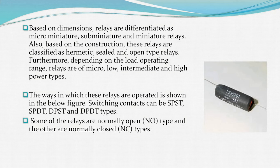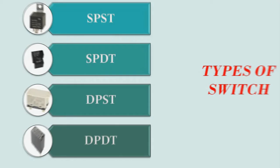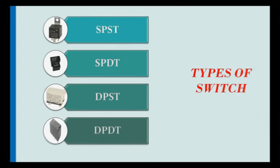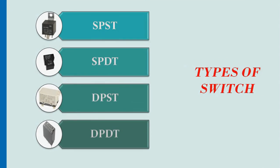Switching contacts can be SPST, SPDT, DPST, and DPDT types. Some relays are normally open (NO) type and others are normally closed (NC) types.